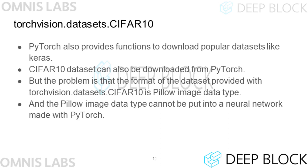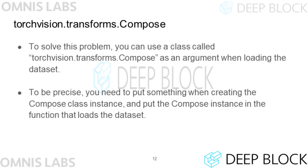PyTorch provides the ability to download popular datasets like Keras. CIFAR-10 can also be downloaded. The CIFAR-10 data provided by PyTorch is a pillow image data type. However, in PyTorch, the pillow image data type cannot be used for model training and inference. To solve this problem, PyTorch provides a parameter called transform when downloading a dataset.